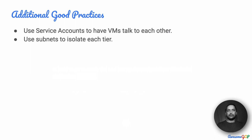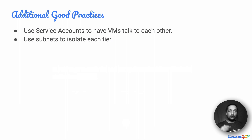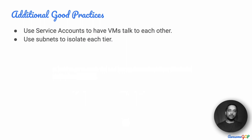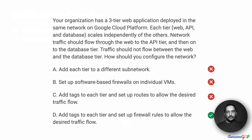A couple of additional best practices: you could have service accounts in these VMs to allow them to talk to each other. You could also isolate these tiers by having separate subnets. Because you have tags, you don't have to do it, but it might still give you additional control to have them in separate subnets as well. In any case, for this particular question, the correct answer is to use tags to identify the VMs in each tier and then set up firewall rules to allow the desired traffic flow.